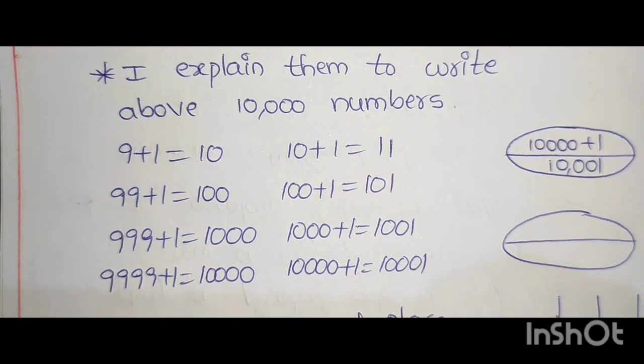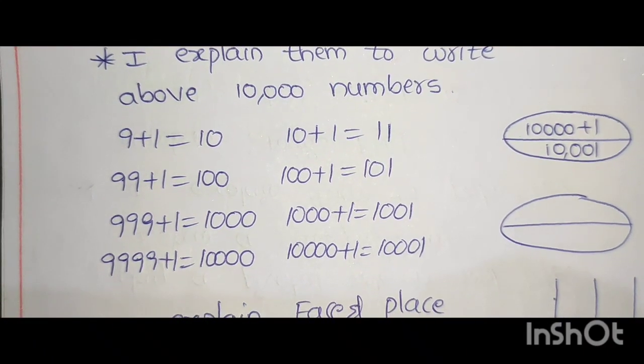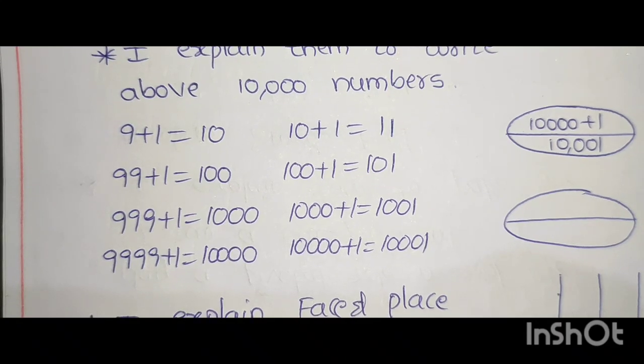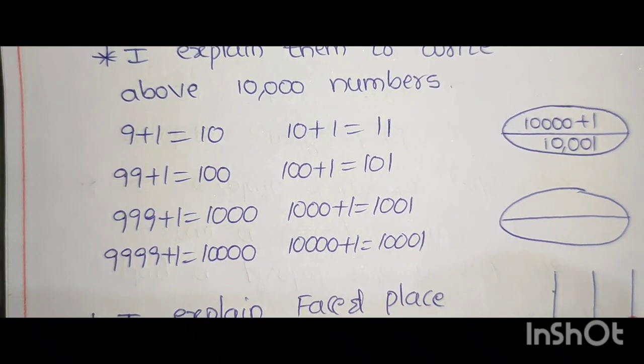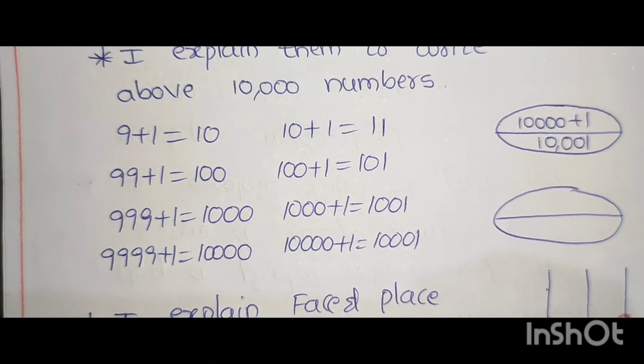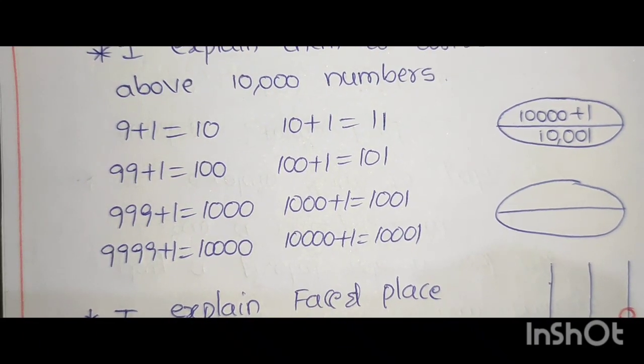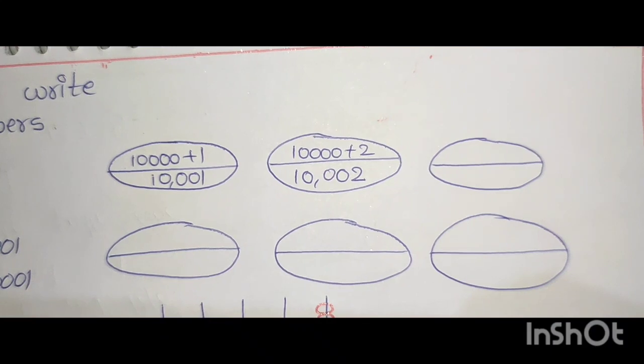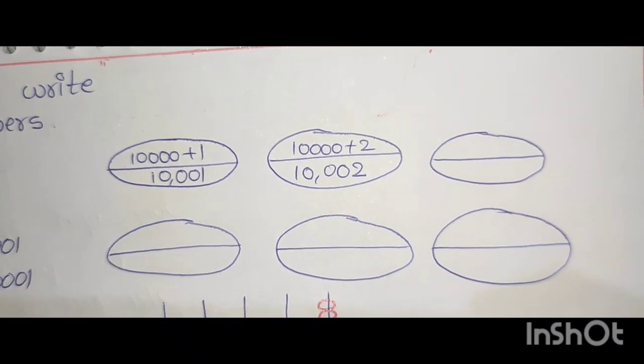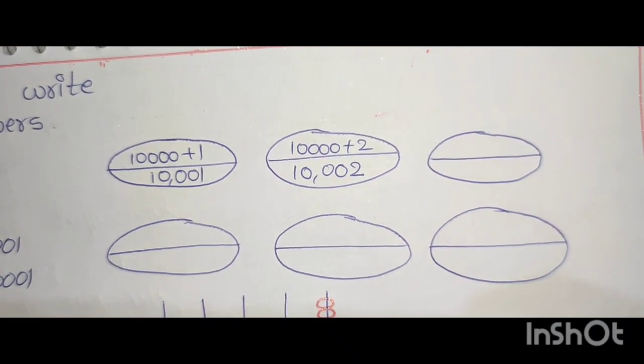I explain them to write about 10,000 numbers. 9 plus 1 is equal to 10, 10 plus 1 is equal to 11, 99 plus 1 is equal to 100, 100 plus 1 is equal to 101, 999 plus 1 is equal to 1000, 1000 plus 1 is equal to 1001, 9999 plus 1 is equal to 10000, 10,000 plus 1 is equal to 10001. Like that they write.